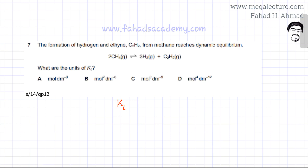Kc is the ratio of the concentration of products. The products are H2, but since there are three H2 molecules being produced in the equation, it's going to be cubed, and the concentration of the other product, which is ethane, C2H2.